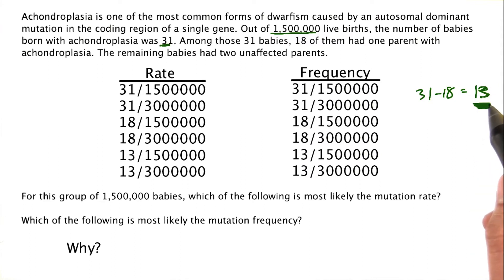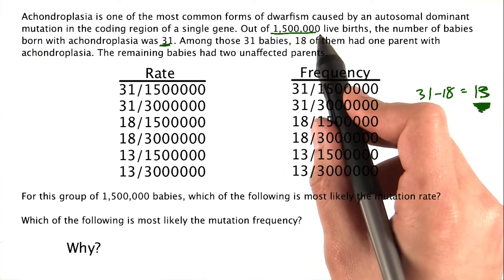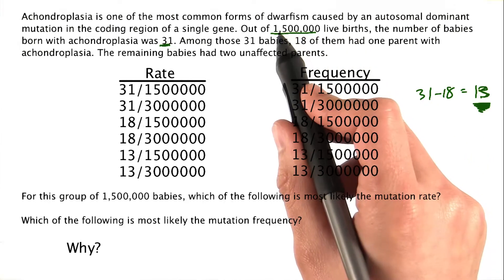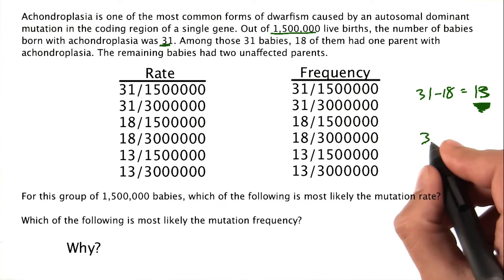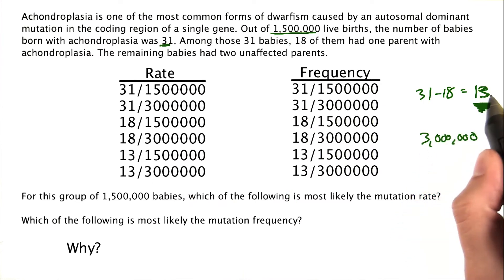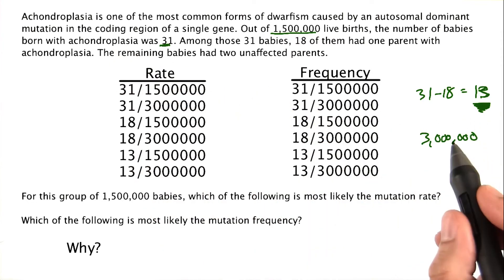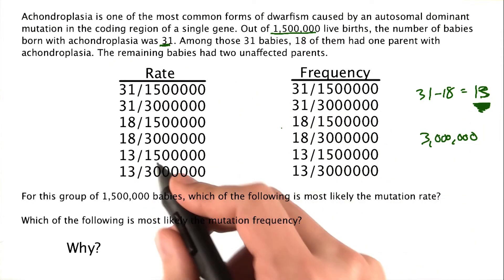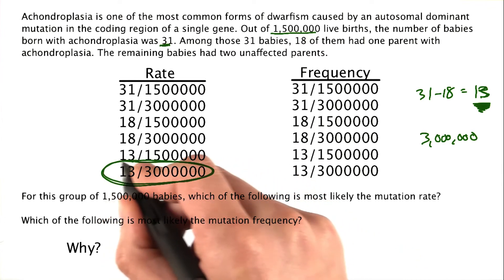Because we know that achondroplasia is caused specifically by a dominant allele, you only need one mutation to cause this. We've got 1.5 million babies, but they have twice as many alleles — 3 million total alleles. 13 of these alleles were mutated to cause a dominant allele, which would then cause achondroplasia. So 13 out of 3 million would be the mutation rate for this.